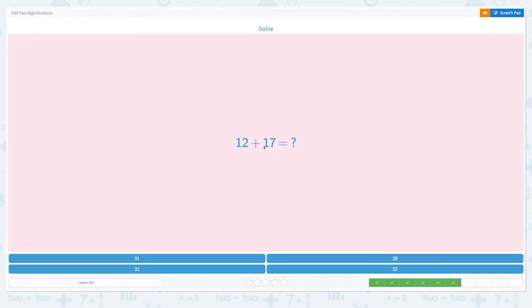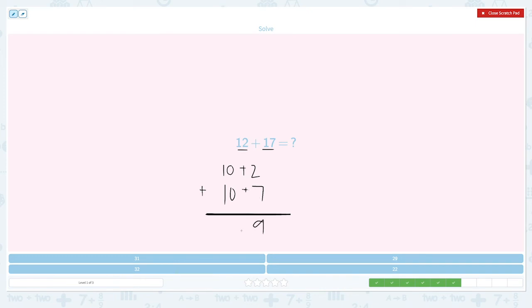Solve: 12 plus 17. Now let's do this way. 12 means 10 plus 2. 17 means 10 plus 7. So I have 2 plus 7. What is 2 plus 7? It's 9. And what is 10 plus 10? It's 20. What is 20 plus 9?